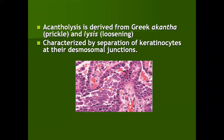Acantholysis is derived from a Greek word, 'akentha', which means prickle, and 'lysis' means loosening. This is characterized by separation of keratinocytes at their desmosomal junctions. Since the desmosomes keep the polygonal shape of keratinocytes, when the desmosomal junctions break, the keratinocytes acquire a circular shape, and these singly placed circular keratinocytes within the blister cavity are called acantholytic cells.